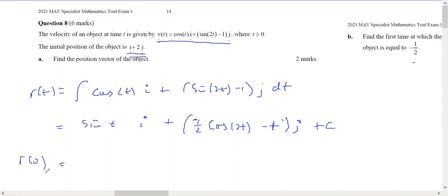If this is my initial vector, r(0) will equal sin(0), which is 0 in the i, plus -1/2 cos(0) plus 0 in the j, plus c. And that's going to be i + 2j equals -1/2 j plus c.